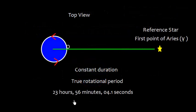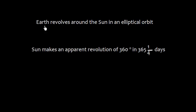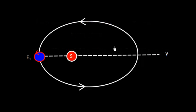We also know that earth revolves around the Sun in an elliptical orbit and it follows Kepler's laws. Well, it also means that Sun makes an apparent revolution of 360 degrees in 365 and one-quarter days.